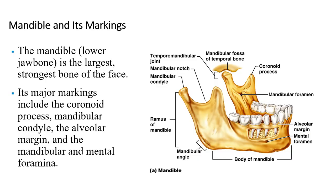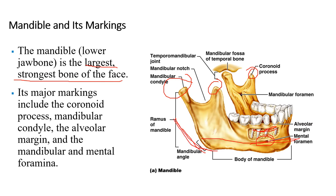The mandible is the lower jaw bone — the largest, strongest bone of the face. Its major markings include the coronoid processes and the mandibular condyles, which form the temporal mandibular joint. Of course there are alveoli, the sockets for the teeth, and the mandibular and mental foramina. Sometimes this is described as having a body, an angle, and a ramus. Most important clinically is the mandibular condyle. The coronoid processes are also attachments for muscles.